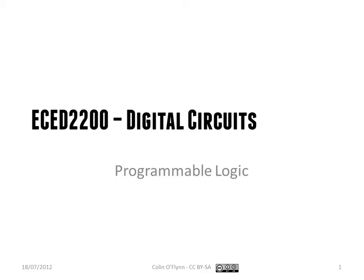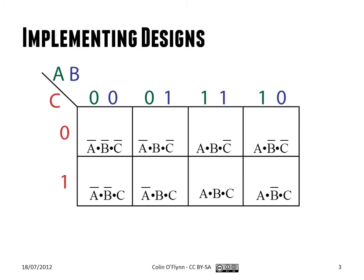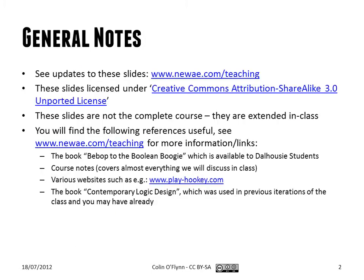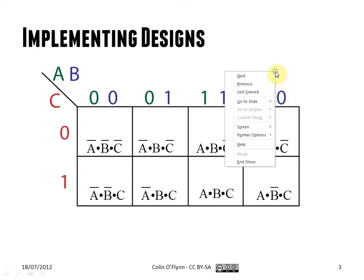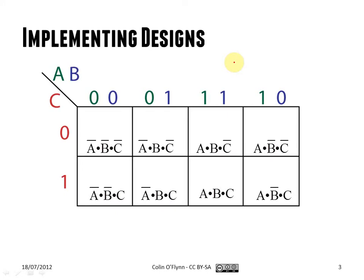We'll talk first about programmable logic and then move on to sequential logic design. For programmable logic, what we've been doing so far is implementing designs based on a few different methods. Most of them come out to having this system where we create product terms and combine them. For example, if you had a truth table, you might use the K-map.